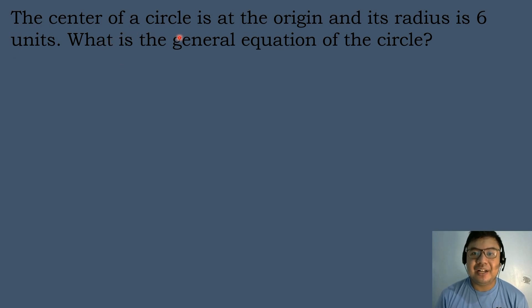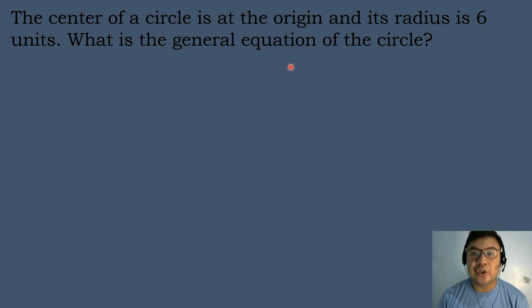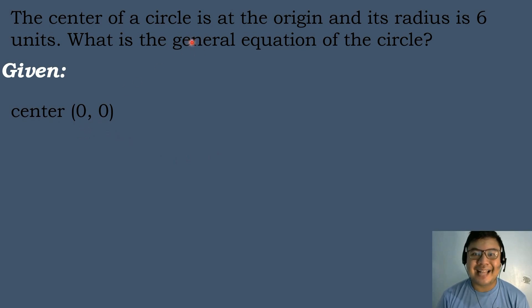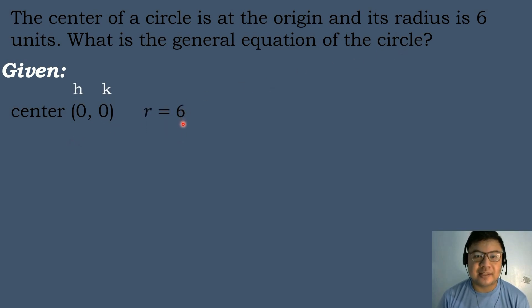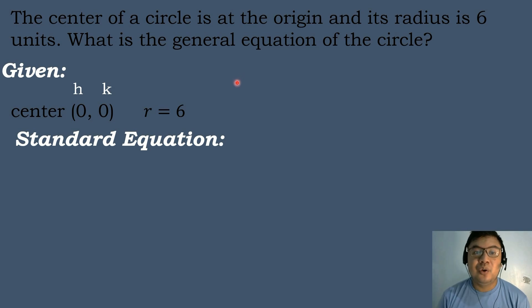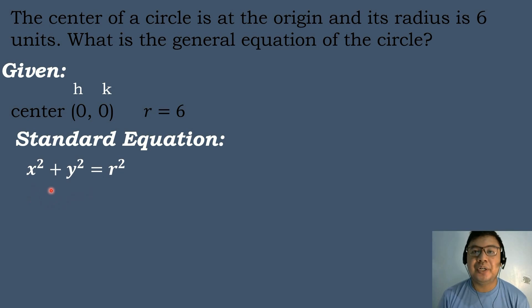Let's have our first example. The center of a circle is at the origin and its radius is 6 units. What is the general equation of the circle? Let's list down the following given. The center of the circle is at the origin, meaning it has coordinates of 0, 0, and the radius of the circle is equal to 6 units. Since the center is at the origin, we will use the formula x squared plus y squared is equal to r squared.